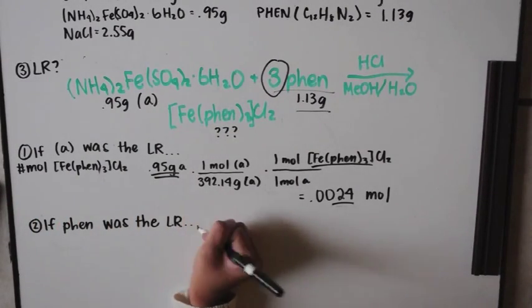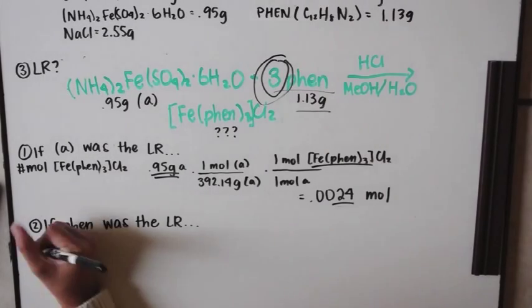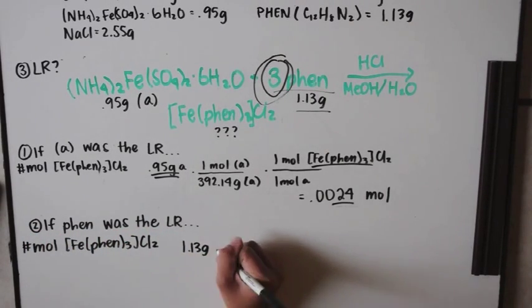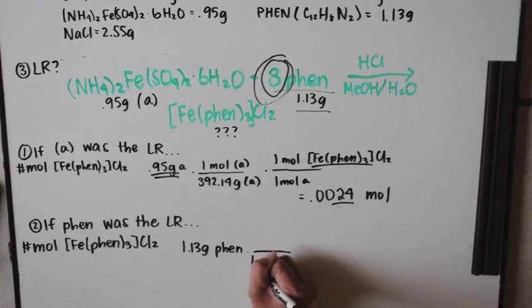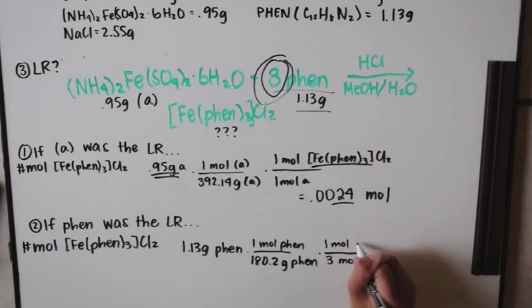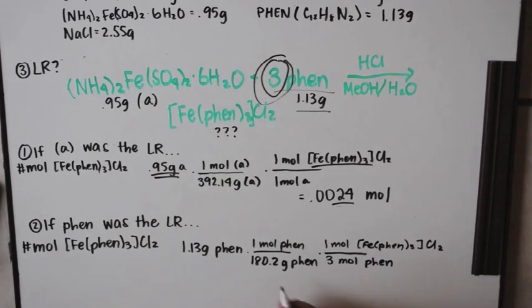If phen was your limiting reagent, you'd do the exact same thing. You would figure out how many moles of iron tris phen chloride salt would be created. So let's start with 1.13 grams. You use molar mass. Notice that it is a three to one mole ratio because three phen would create one mole of iron